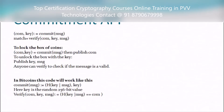To lock the box of coins, that means to encrypt, 'com, key = commit(message)' will be used. Then you can publish your 'com' — that is the message. To unlock the message, you can publish 'key' and 'message' so that anyone can verify and check if the message is valid. In Bitcoin's case, this will look somewhat like this: 'commit(message) = hash(key + message)', where 'key' is a 256-bit hash value.